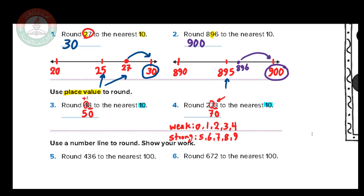Because 3 is a weak digit, it does nothing — we keep the 7 as 7. We write the 2 on the left unchanged. So the answer is 270. To summarize the rule: to the right of the circle make zeros; to the left write unchanged; if the underlined digit is weak, keep the circled digit; if strong, add 1 to it.